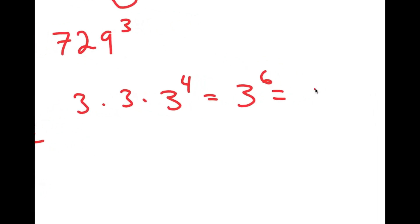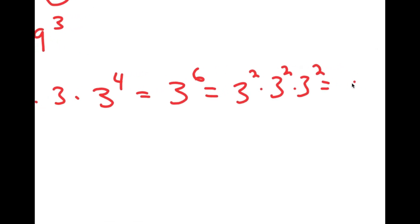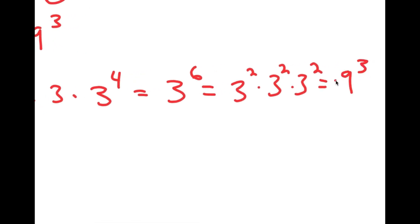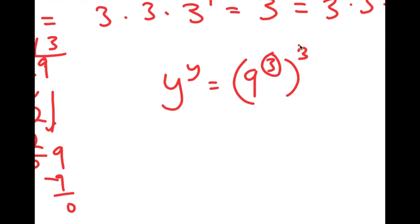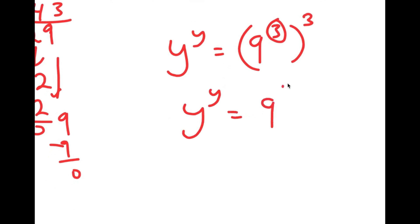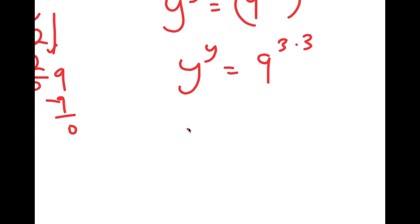And 3 to the power of 6, I can break that down into 3 squared times 3 squared times 3 squared, which is equal to 9 to the power of 3. So I replace 729 to the power of 3 with 9 to the power of 3 to the power of 3. And 9 to the power of 3 to the power of 3 is the same thing as 9 to the power of 3 times 3, and 3 times 3 is 9.